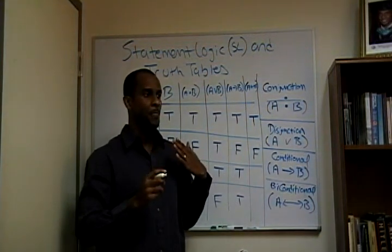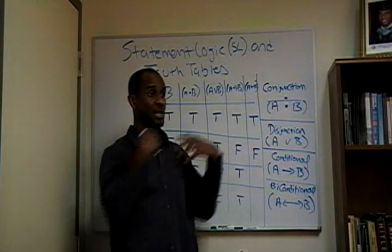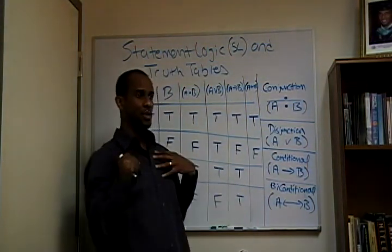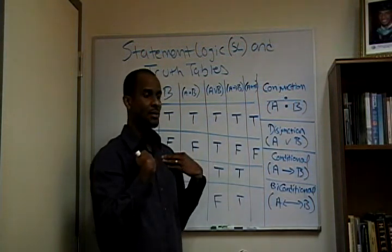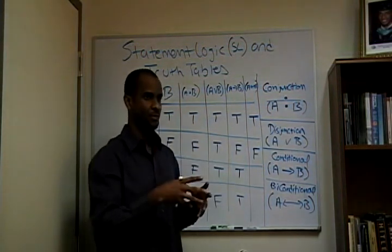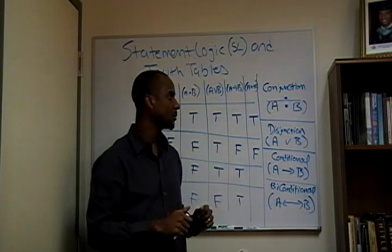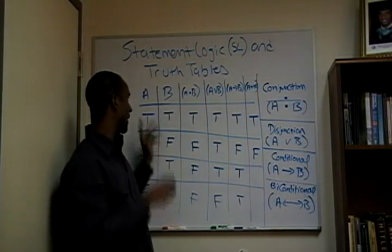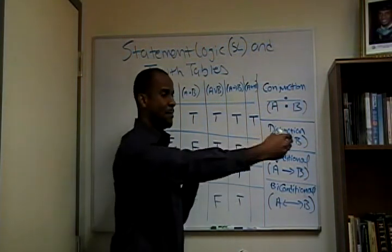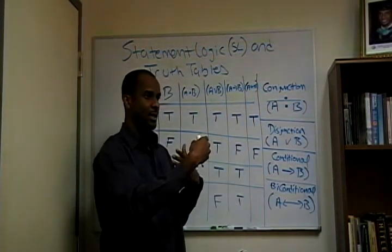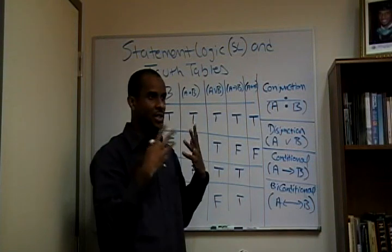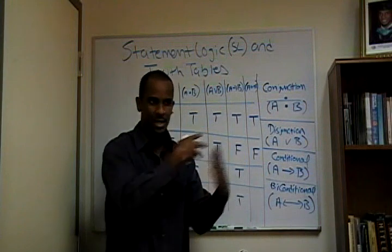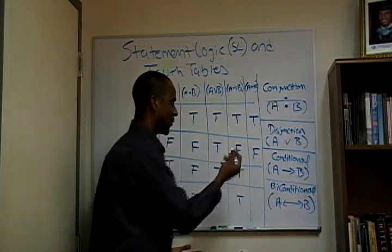If I look into the mirror, and the mirror represents what's being projected, then the claim is true. So if I project A and A is reflected back, the claim is true. That's the easiest way I know how to explain it. If I'm projecting A and B is being reflected back, then where is that source of B coming from? There's some falsehood here — I'm projecting A, I'm being reflected back B, there's some confusion, so it's false.